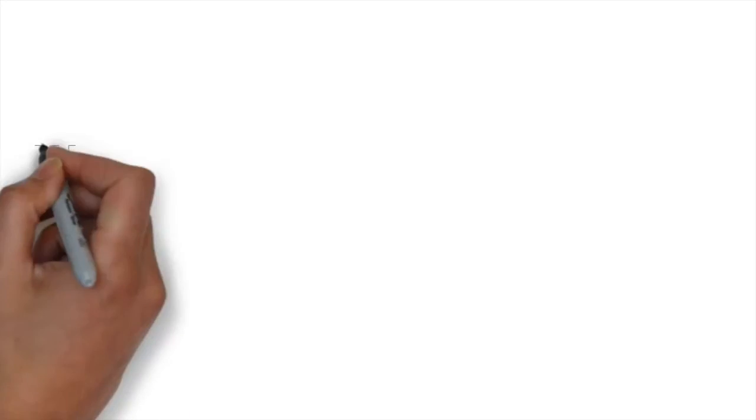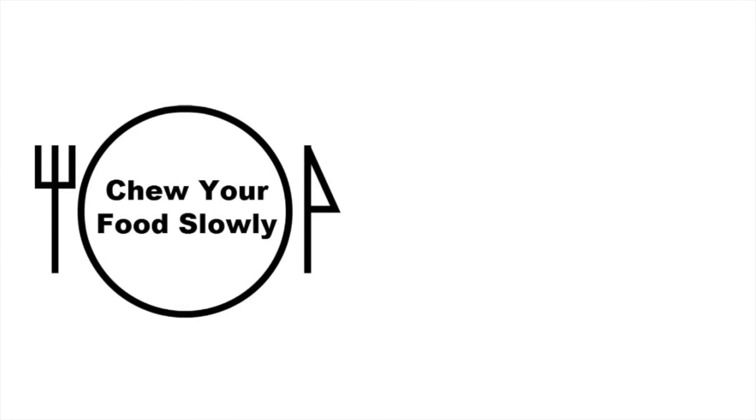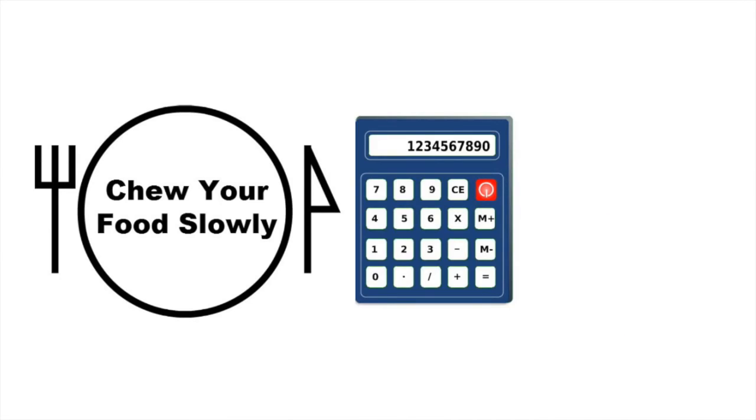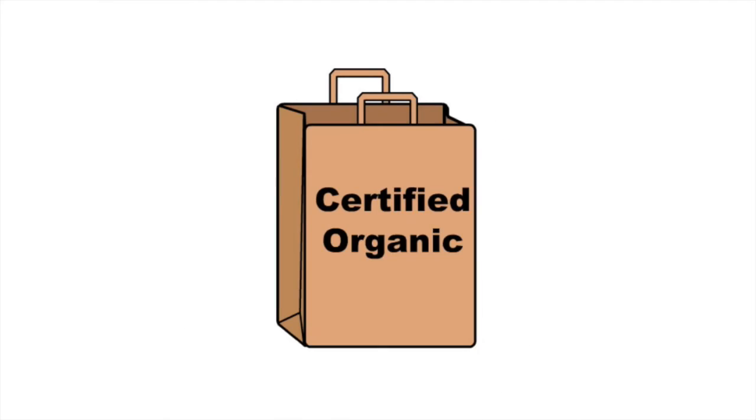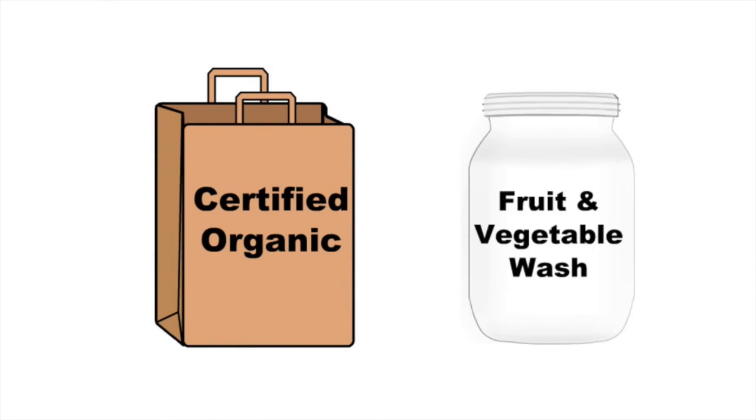Always eat slowly until satisfied. Don't overeat, it stresses the digestive system. Don't count calories and never go hungry. Always buy organic if possible. If you can't, remove the pesticides with a veggie wash.